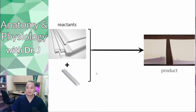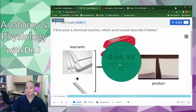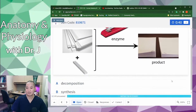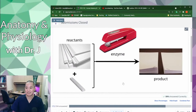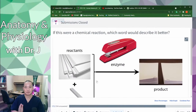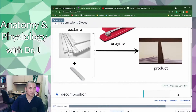Here's another example: paper and staples are your reactants, and you want to staple all the papers together to make a product. The enzyme in this case is a stapler. In this chemical reaction, the answer is synthesis — because you're making a new bond between your reactants and building a new bigger structure from smaller individual parts.